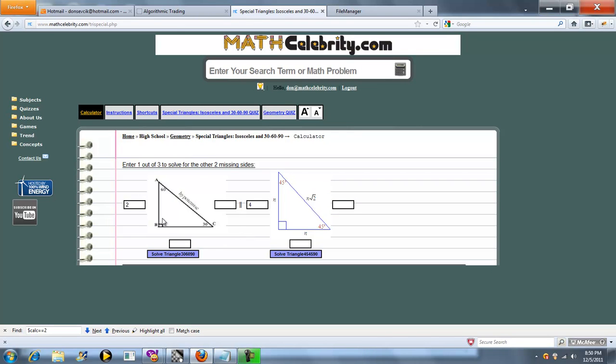So we have our two calculators. Our 30-60-90 triangle, where each box represents the side that it's next to: small side, large side, hypotenuse. And our 45-45-90 triangle, the same thing: small side, small side, hypotenuse.